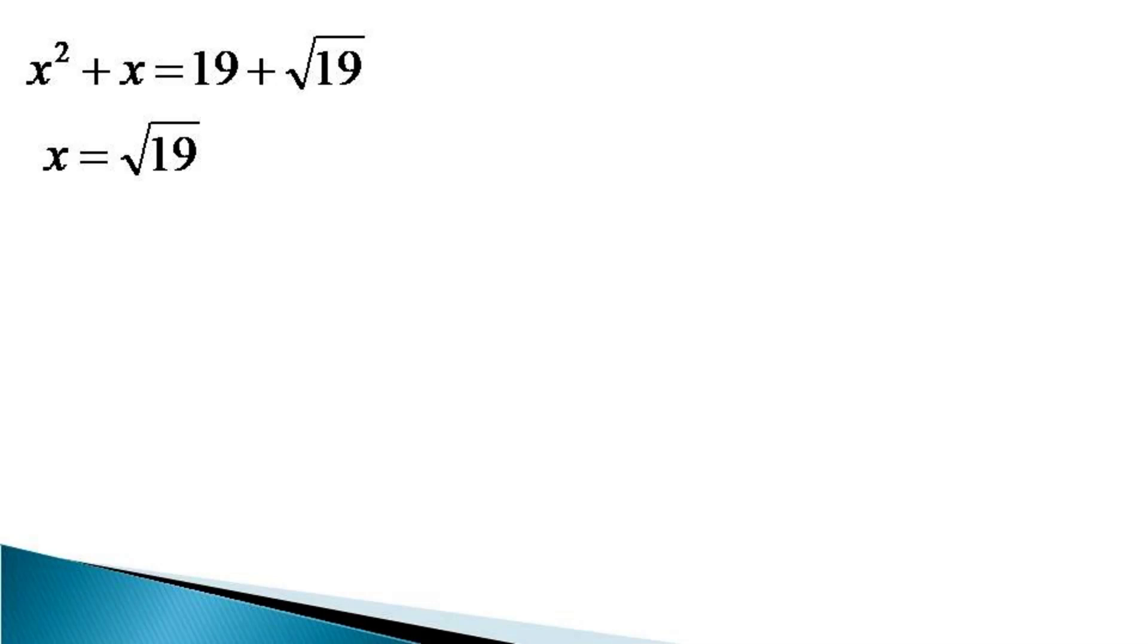We transfer all the terms on the left hand side to get a quadratic equation as x square plus x minus 19 minus root 19 is equal to 0.